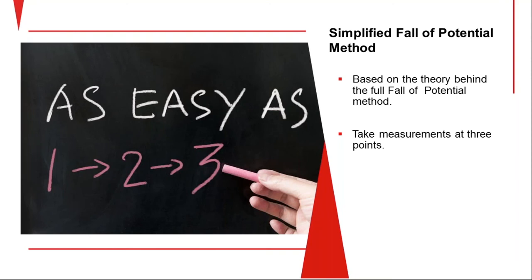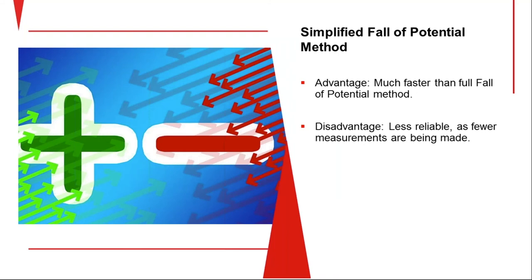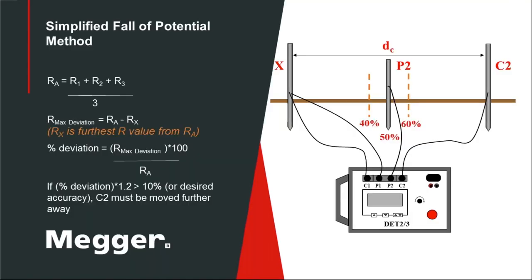Simplified fall of potential is the same idea made a lot quicker. We're running out of time, so I won't go into detail. Basically you're using fewer measurements, only going to measure three points: half the distance and then 10 percent in and 10 percent out of the distance to your current probe. There's a little mathematical crunch you put those numbers through. What that tells you is your percent accuracy. If you've got two and a half ohms at your 50 percent position and a two percent accuracy, you'd be pretty happy.